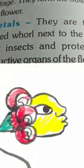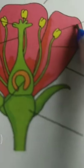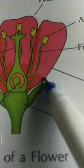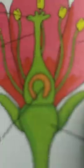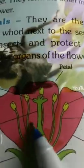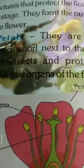Petals are bright colored whorls next to the sepal. They attract insects and protect the inner reproductive organs of the flower.